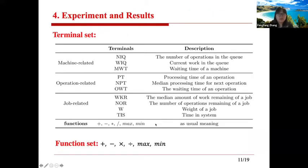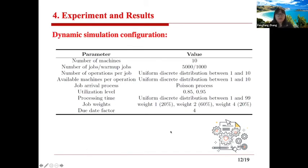Now let's move to the experiments and results. For GP, we have a terminal set and a function set — we give GP information about the machine, operation, and job itself, and use basic functions for GP to evolve the rules. Because we work on a dynamic problem, our research is based on simulation. For example, in the simulation we have 10 machines processing 5,000 jobs, where jobs arrive following some distributions and different jobs have different processing times and importance levels.